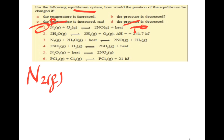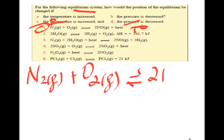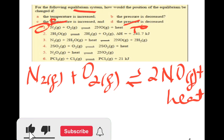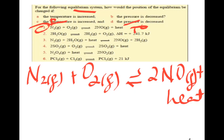Number one: Nitrogen plus oxygen gives 2 NO gas plus heat. You have to identify whether the reaction is endothermic or exothermic. For an endothermic reaction, heat appears as a reactant. For an exothermic reaction, heat appears as a product. Here, the heat is written on the product side.